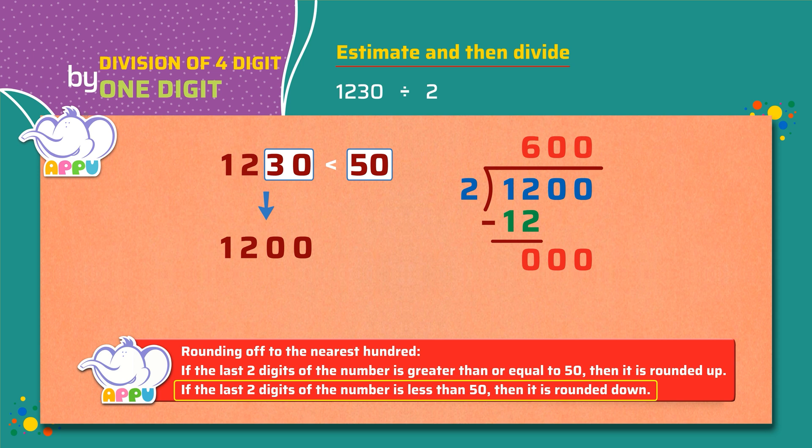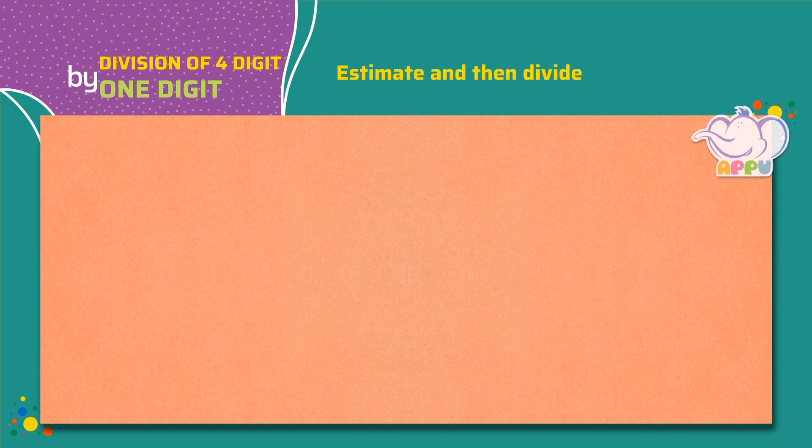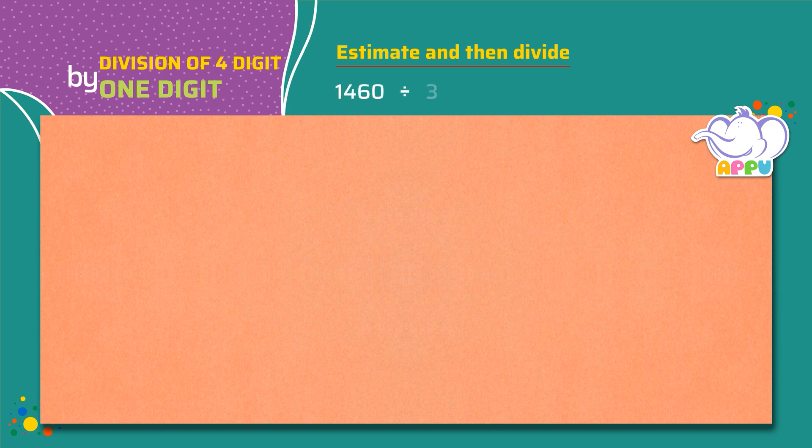We stop division because 0 is less than 2. So the estimated quotient is 600. I like that. Estimate the value of 1460 by 3.